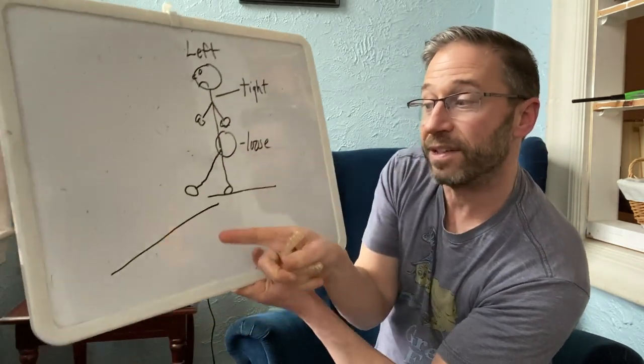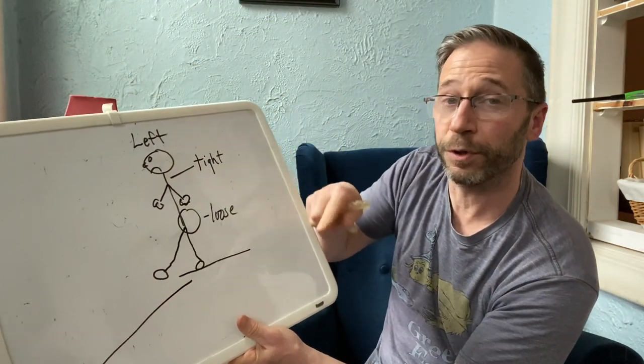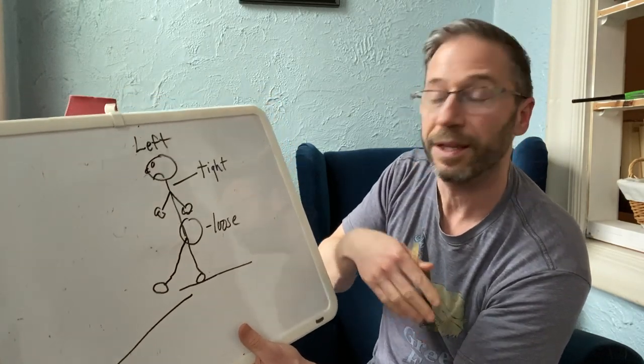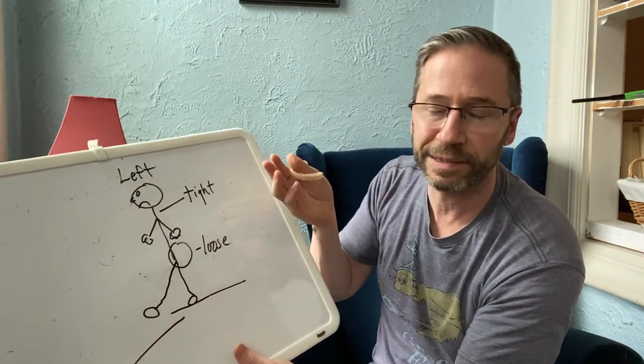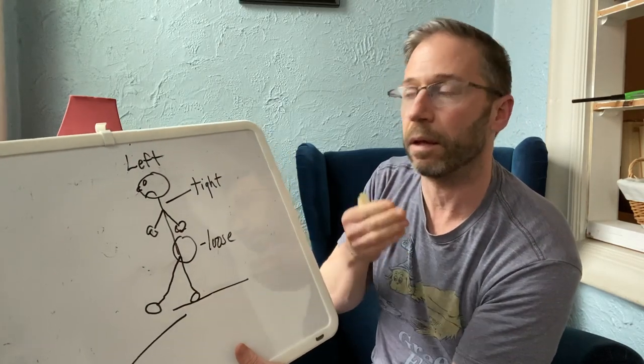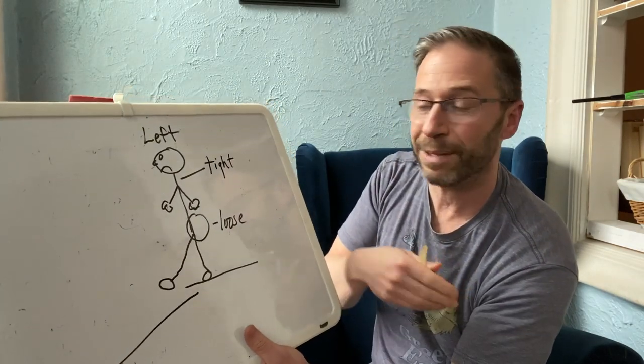So do you have a left hamstring? It's there, but it's not being used in upright activity. Left adductor, left glute medius, anterior glute medius, left abs, that whole left ZOA, left AFIR area,